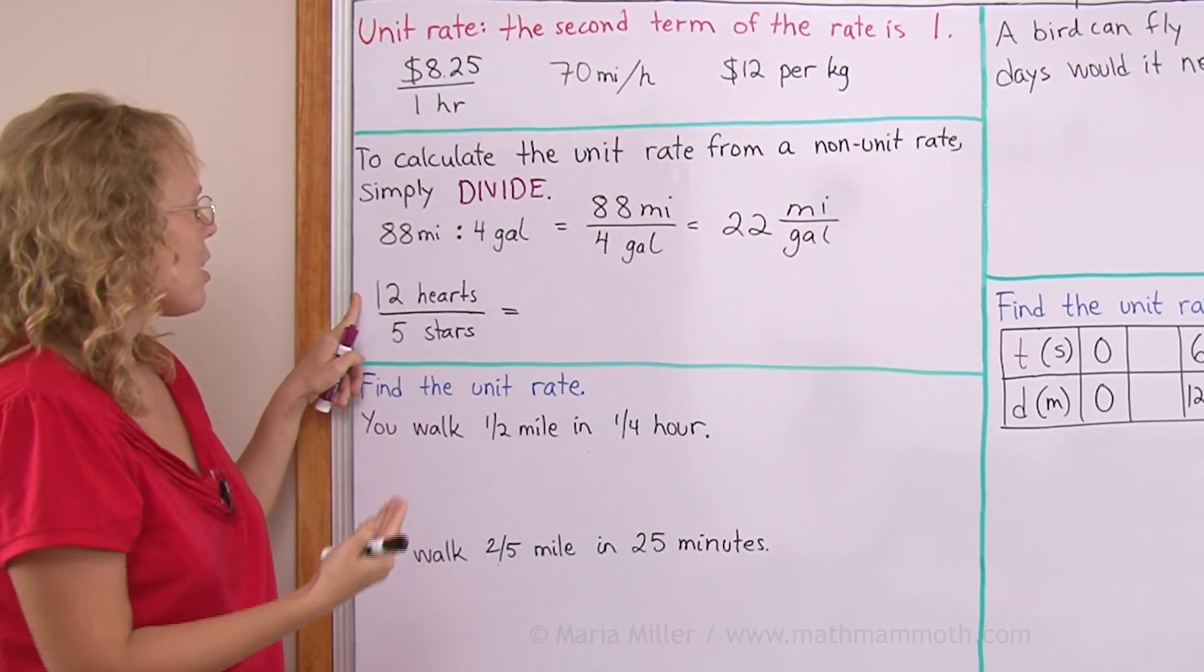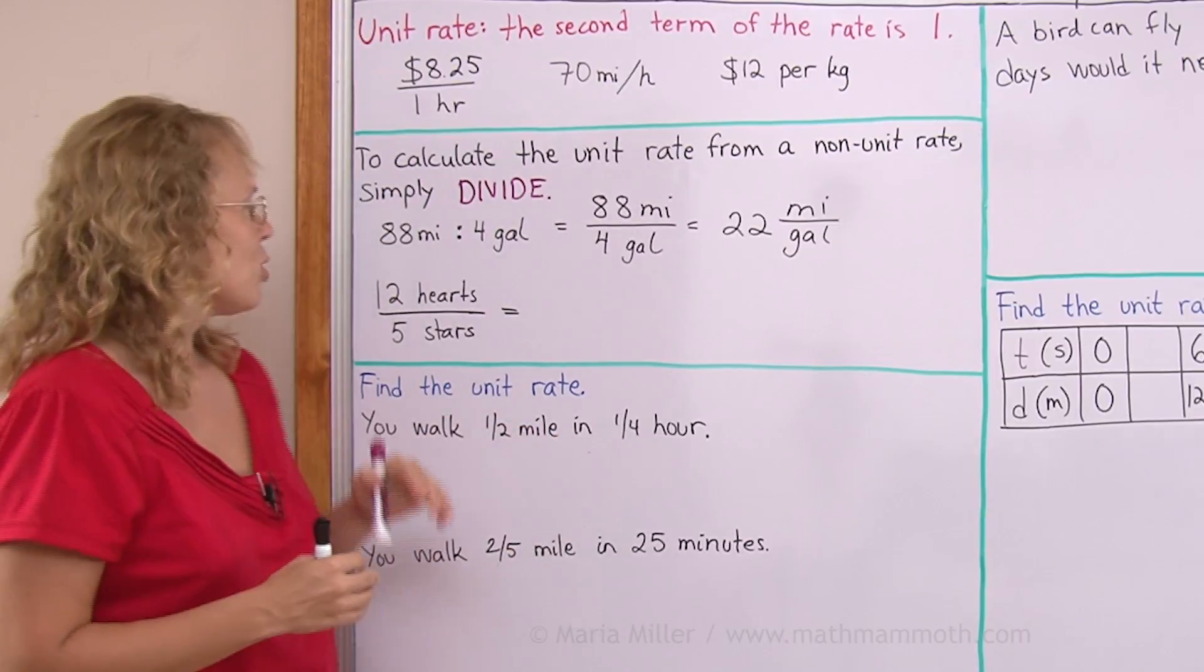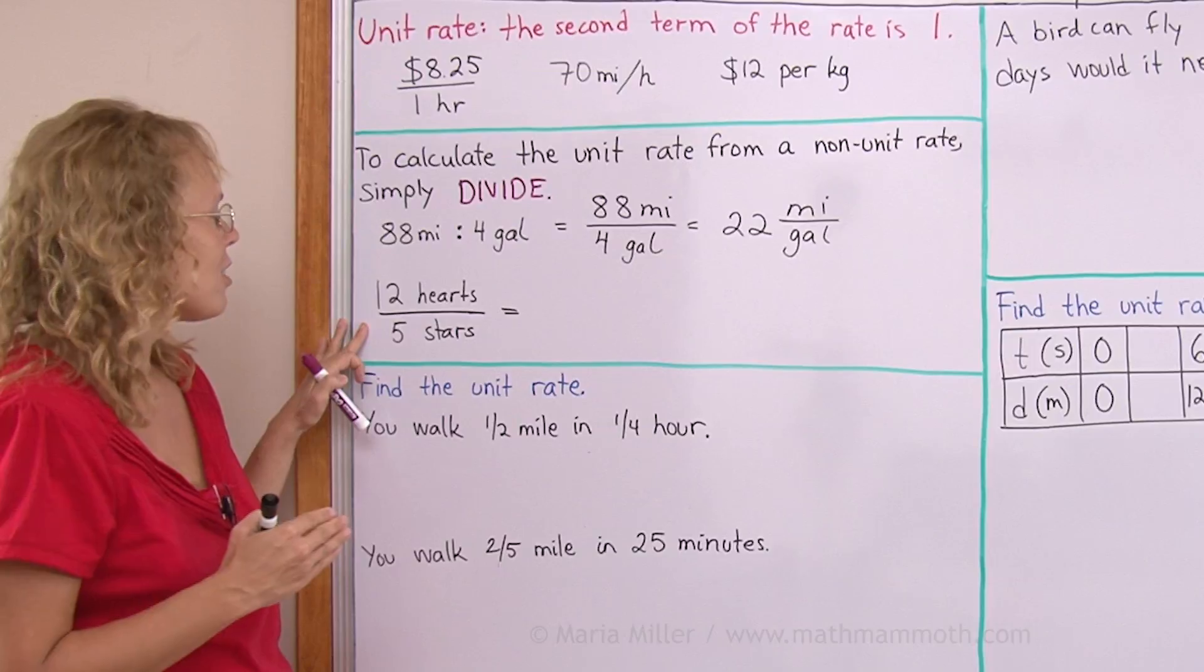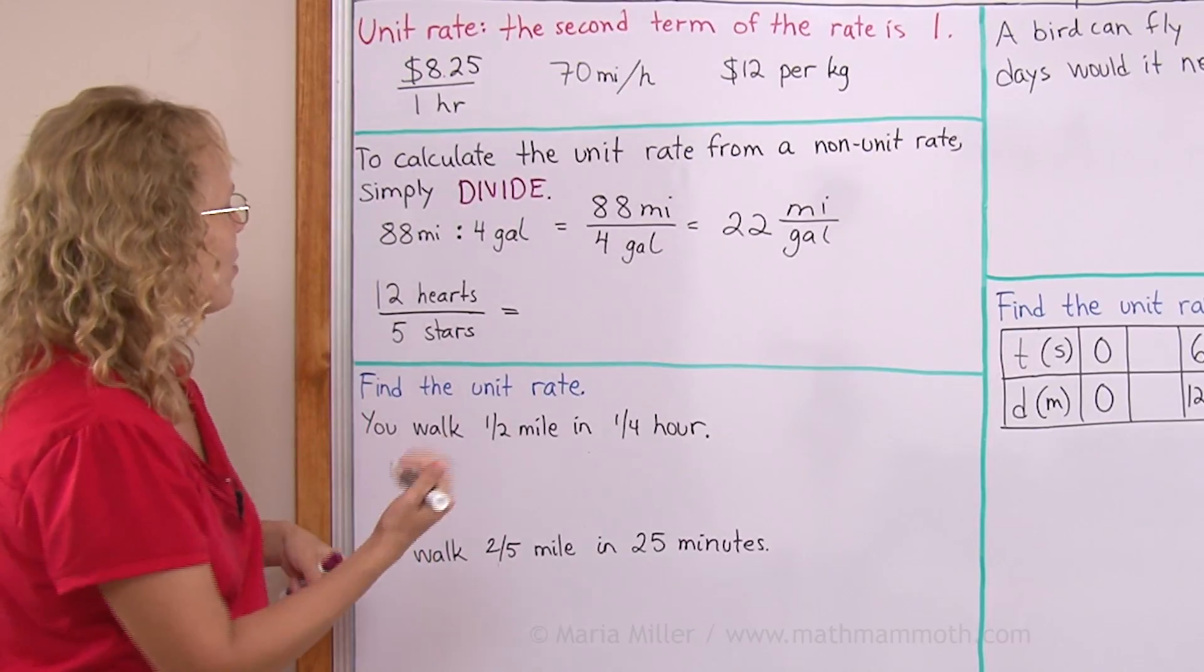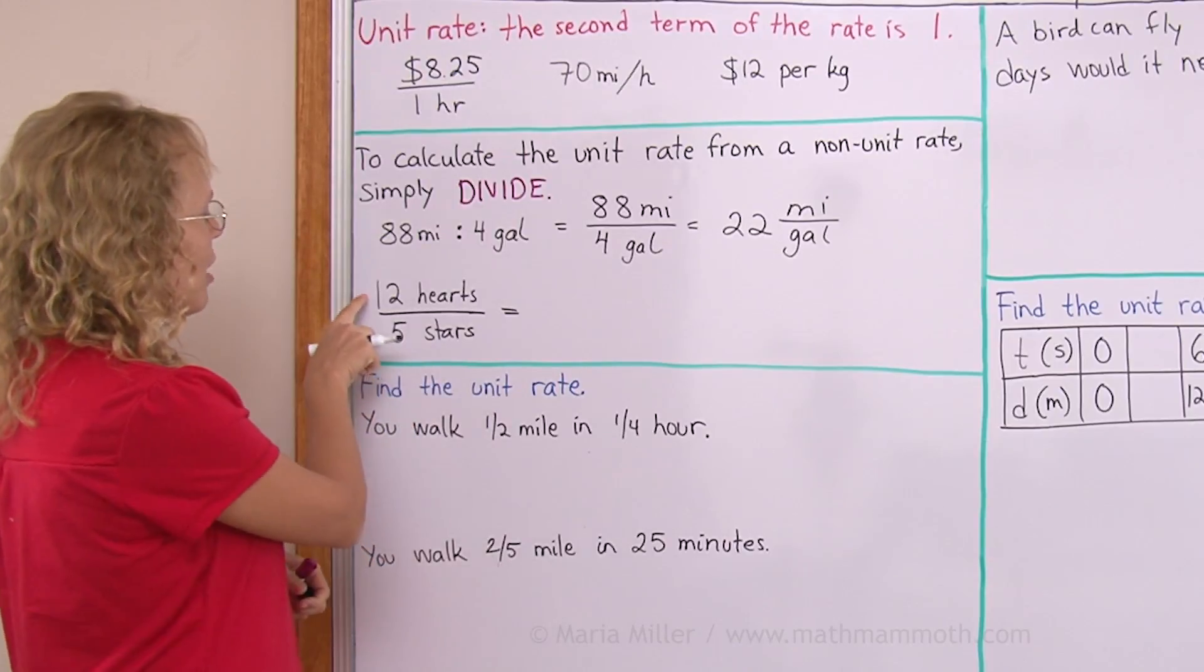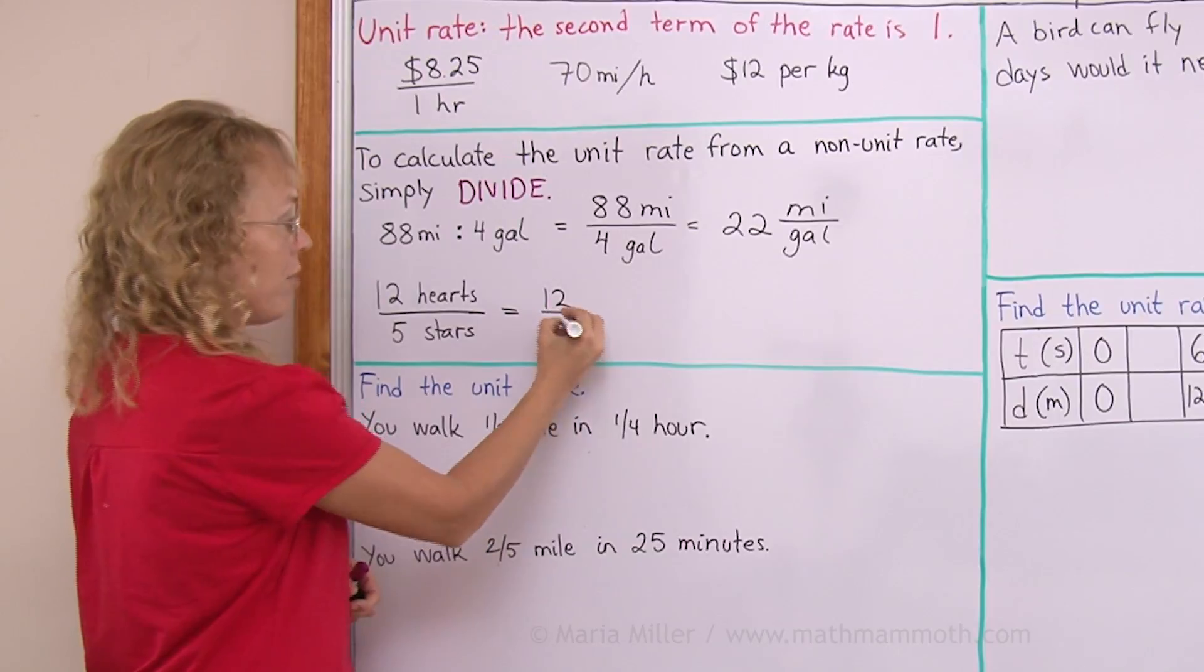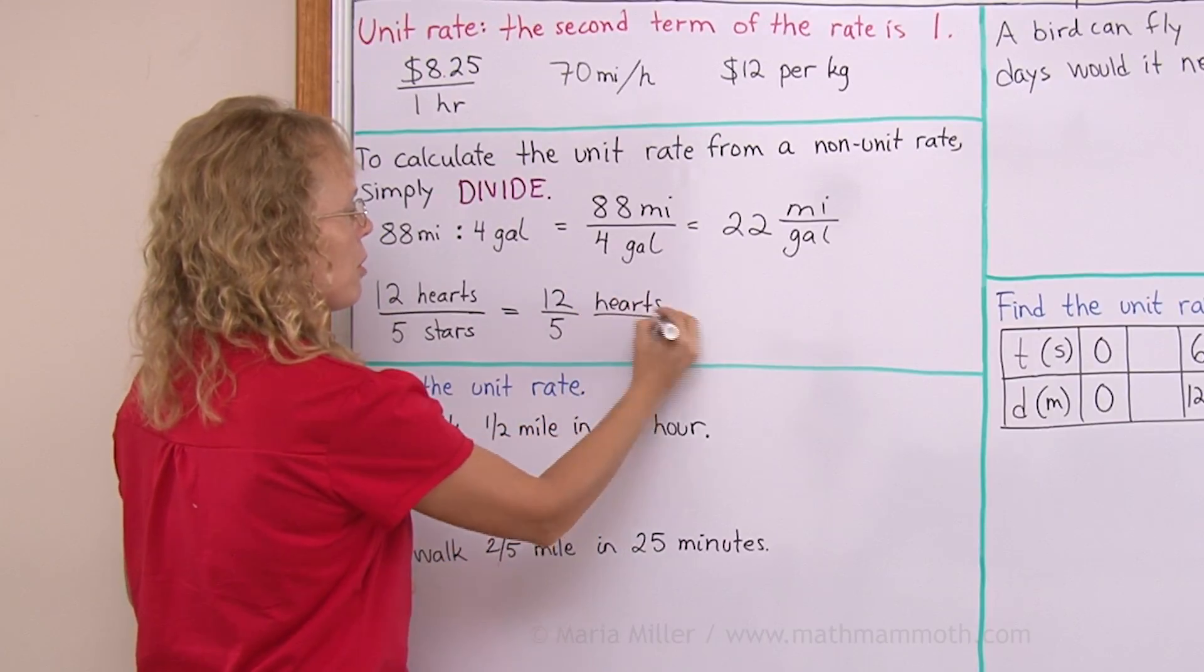So this is now 22 miles per one gallon unit rate. Or if we have 12 hearts to five stars, let's say you're making a pattern and you are drawing 12 hearts to each five stars. It's not that you really want to calculate a unit rate for this situation, but you can. If I do that, then I divide 12 divided by 5. So I get 12 fifths hearts per star.